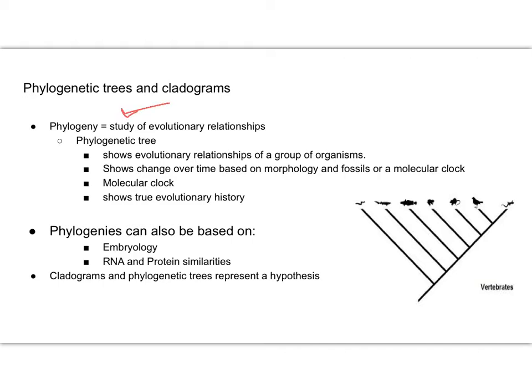Our phylogenetic tree is going to be this tree-like structure that shows the evolutionary relationships of our groups of organisms. It's going to show the amount of change over time. That's one of the differences between a phylogenetic tree and a cladogram—a phylogenetic tree is supposed to represent passages of time.